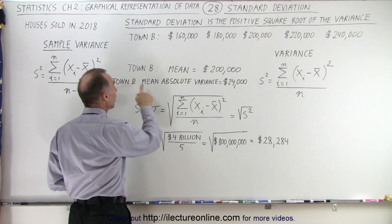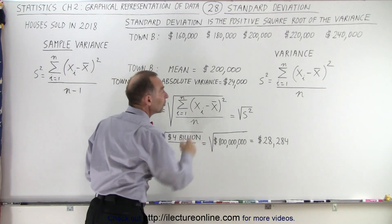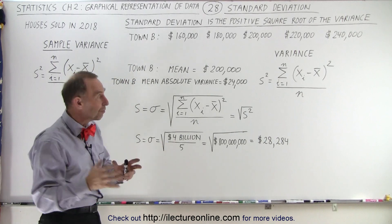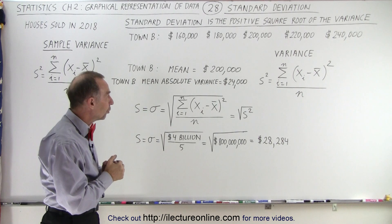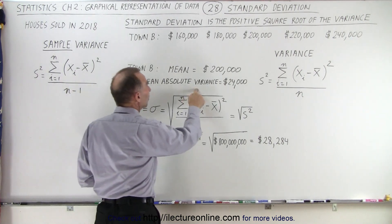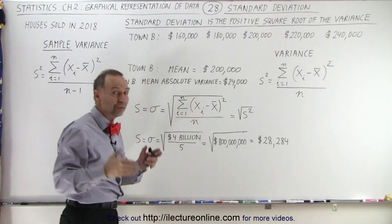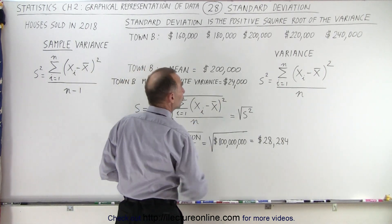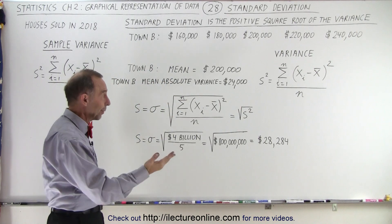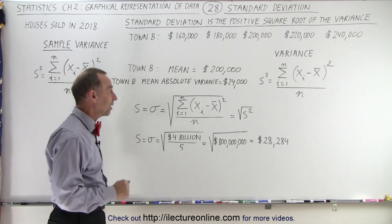We calculated the mean absolute variance, which means the average difference between the average house price and the prices of the houses as they were sold. We found that the average difference, and of course we take the absolute value because we only want positive differences, the average difference was $24,000, that means greater or less than the average price.